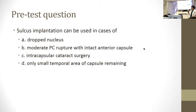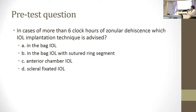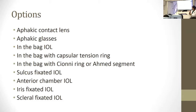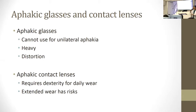Sulcus implantation — putting the intraocular lens in the sulcus. Which of those would you use a sulcus lens in? In cases of more than six clock hours of zonular dehiscence, which lens implantation technique is advised? The objectives of this talk are to look at the indications for each type of aphakia correction, to understand the surgical techniques, and to understand the pros and cons of each technique. There are lots of options for correcting aphakia, ranging from aphakic contact lenses to glasses to all the different lens implantation techniques.